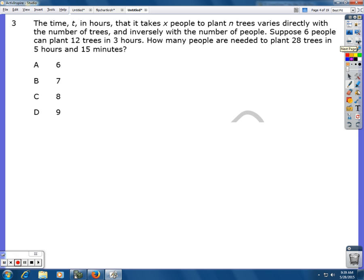Number three, the time t in hours that it takes x people to plant n trees varies directly with the number of trees and inversely with the number of people. So I'm actually going to stop right there. For directly and inversely, I have two equations for those.